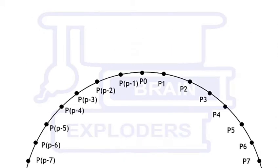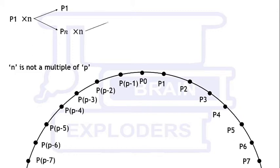Now take P points on a circle such that P is a prime number. Take a number n which is not a multiple of P. So if we multiply P1 with n, then two cases are possible.